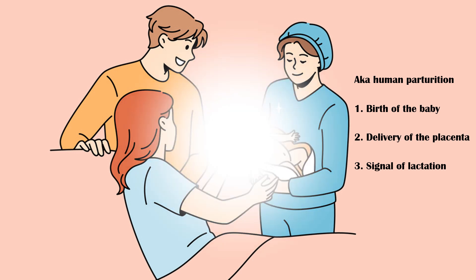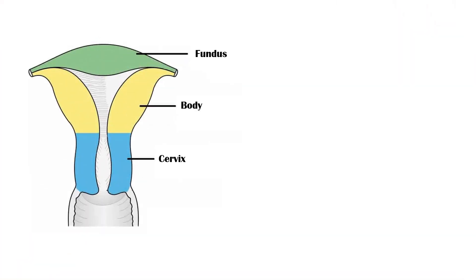The human uterus consists of three main anatomical parts: the fundus, body, and the cervix.